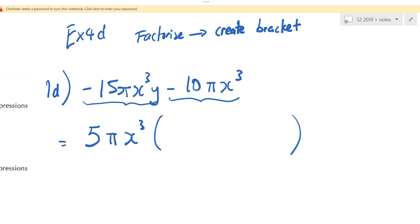I try. 15 divided by 5, what do I get? 3. 3 or negative 3? Negative 3. Pi already take out. x cubed take out. Left y. Okay? Second one? Negative 2. Just negative 2, right? Agree.